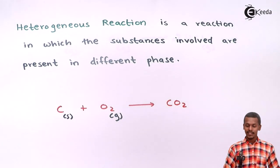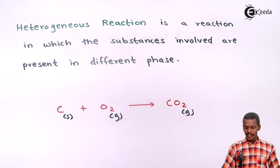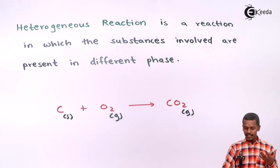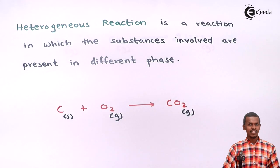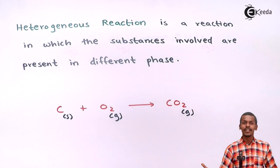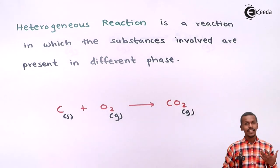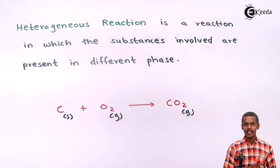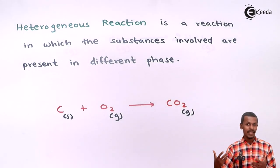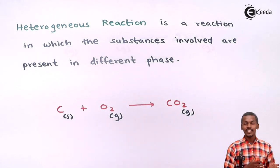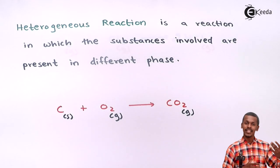Carbon dioxide is also present in a gaseous phase. So in this case, two of the substances — oxygen and carbon dioxide — are in the gaseous phase, while carbon is in the solid phase. This makes one substance different from the other two. We can clearly see the difference in phase: solid carbon reacts with gaseous oxygen to form gaseous carbon dioxide. The reactant carbon is of a different phase compared to the other substances.